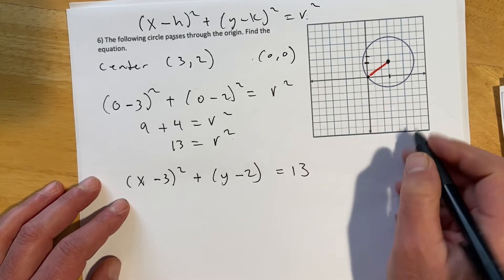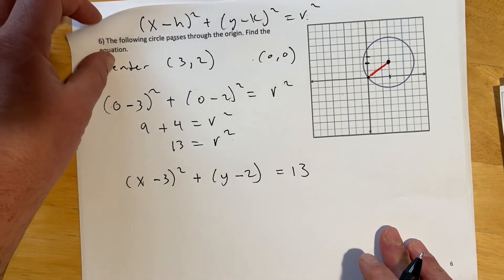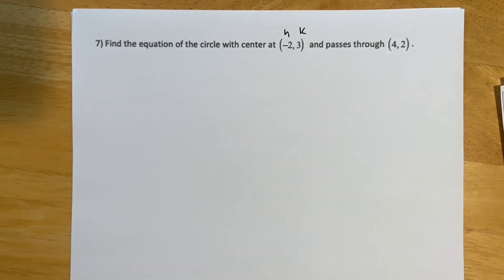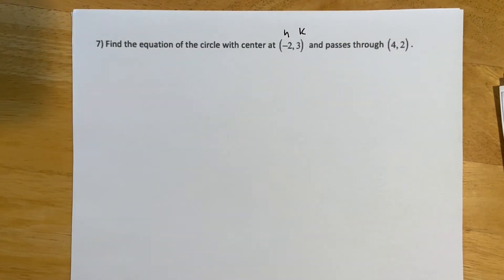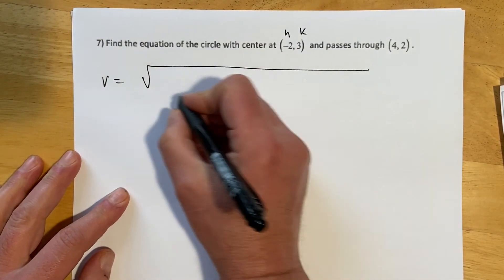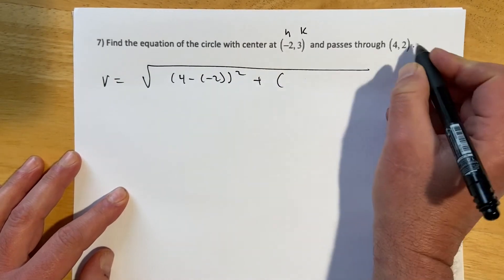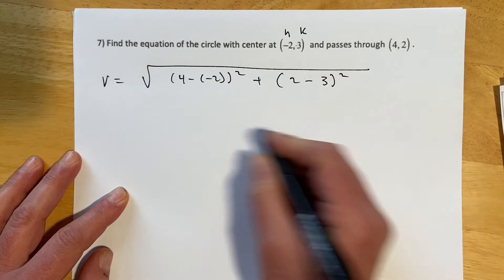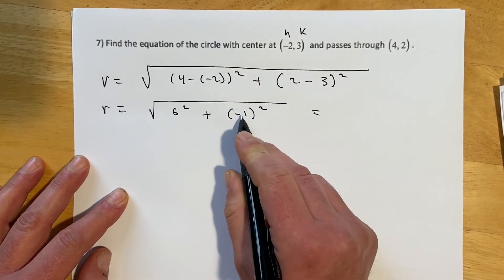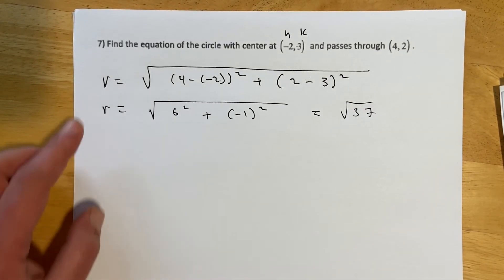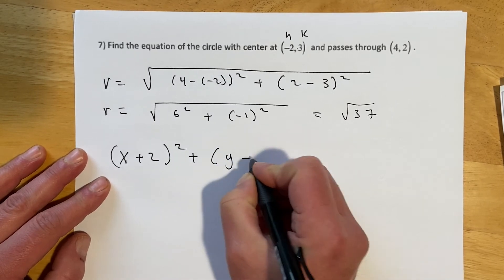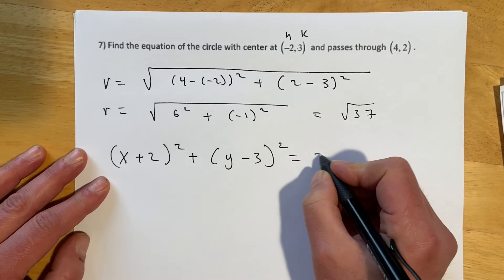For a circle with center (−2, 3) passing through point (4, 2): use the distance formula to find the radius. d = √[(4−(−2))² + (2−3)²] = √[6² + (−1)²] = √[36 + 1] = √37. Since we need r² for the equation, r² = 37. The equation is (x + 2)² + (y − 3)² = 37, remembering the center shows as opposite signs in the formula.